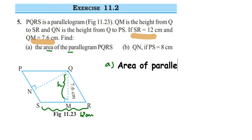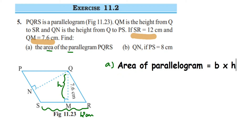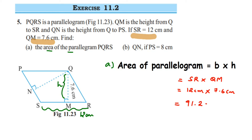Area of parallelogram = base × height. Here, base is SR and height is QM. Substituting: SR = 12 centimeters and QM = 7.6 centimeters. Multiplying these two: 12 × 7.6 = 91.2 square centimeters. So the area of parallelogram PQRS is 91.2 cm².